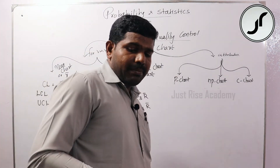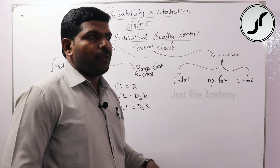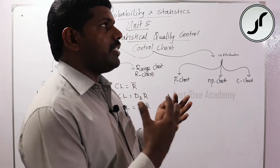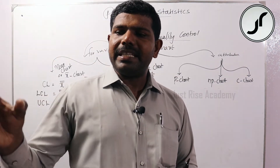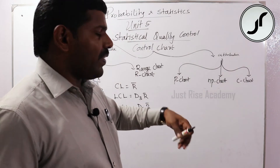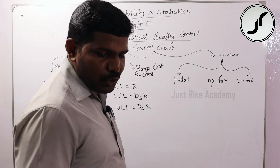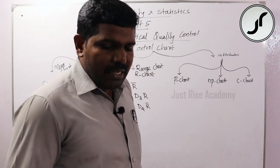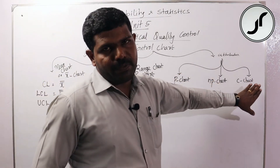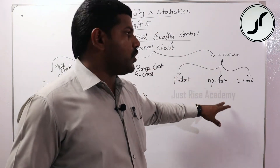The P-chart is for the proportion of defective items. For example, in a factory producing tube lights or bulbs, we calculate defective items — that is an attribute. We can apply the proportion of defective chart. Based on the question, we conclude whether to apply the P-chart, NP-chart, or C-chart.